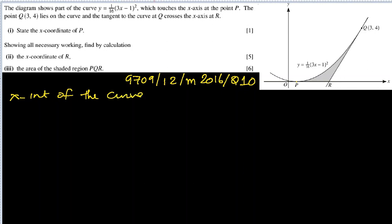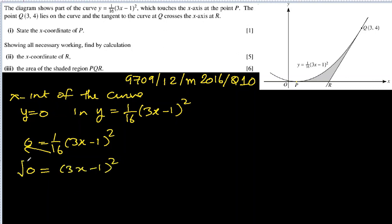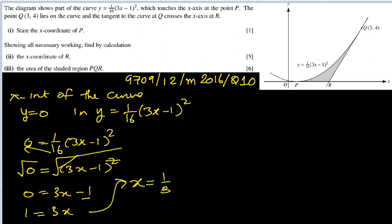For any x-intercept we substitute y = 0, because on the x-axis the y-coordinate is always 0. Substituting into the curve equation: 0 = 1/16(3x−1)². By cross multiplication, 0 = (3x−1)². Taking the square root of both sides gives 0 = 3x−1, so 1 = 3x, and x = 1/3.